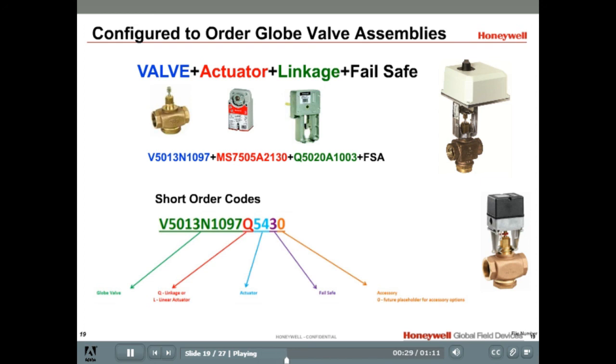Select a valve actuator and linkage and fail-safe combination then combine them to build a configured assembly number. These valve and actuator assemblies also include free custom tagging. The configured assembly numbers might be too many characters and not work for some distributors systems so we offer short order codes that can be used in place of the configured assembly numbers.